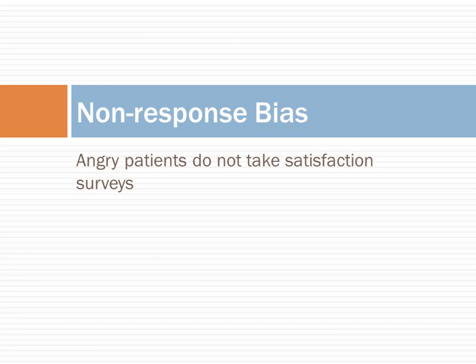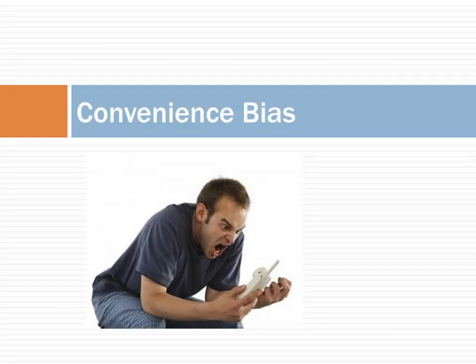For example, angry patients do not take satisfaction surveys, causing a response bias. Satisfaction surveys are therefore more positive than the true reality. Another common bias is a convenience sample, where individuals who are easily accessible are more likely to be included. These individuals do not represent the entire picture. For example, people who hang up on automated telephone systems are not included in the counts of satisfied customers, usually taken at the end of the telephone interaction.